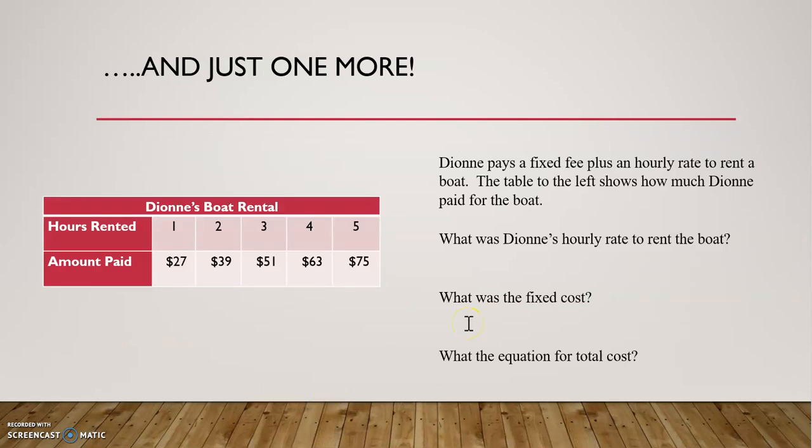Okay, let's go ahead and look at one final problem. Dionne pays a fixed fee plus an hourly rate to rent a boat. The table to the left shows how much Dionne paid for the boat. What was Dionne's hourly rate to rent the boat? So we're not looking at a graph, we're looking at a table this time. Now, let's think about that. If she's paying an hourly rate, the best way to identify that is when we go from 1 to 2, 2 to 3, 3 to 4, 4 to 5, looking for the rate of change or the difference, right? What is the difference as you look at each of those?